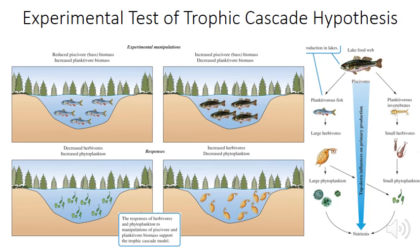Carpenter and Kitchell tested this by manipulating fish populations in multiple lakes. In one lake they removed all large piscivorous fish — smaller fish increased, fed heavily on zooplankton, allowing phytoplankton to increase, raising primary productivity. Conversely, in another lake they introduced higher numbers of large piscivorous fish — this reduced smaller fish, freed zooplankton from predation, and those zooplankton fed heavily on phytoplankton, reducing primary productivity.